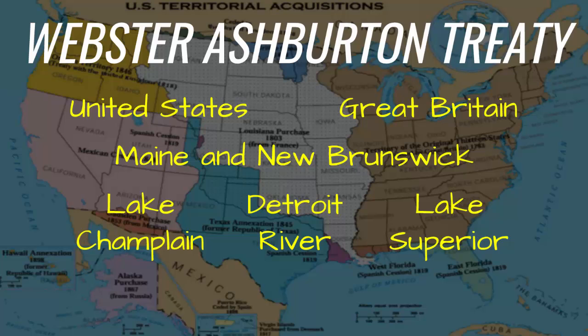The Webster-Ashburton Treaty was needed to resolve problems that persisted after signing the Treaty of Paris ending the Revolutionary War. There was lasting disagreement between the United States and Great Britain over the northeast border of the United States by Maine. Tension rose when Americans were arrested around the border, leading to a non-confrontational war and eventually the Webster-Ashburton Treaty, which helped clear up that border and borders in the west.